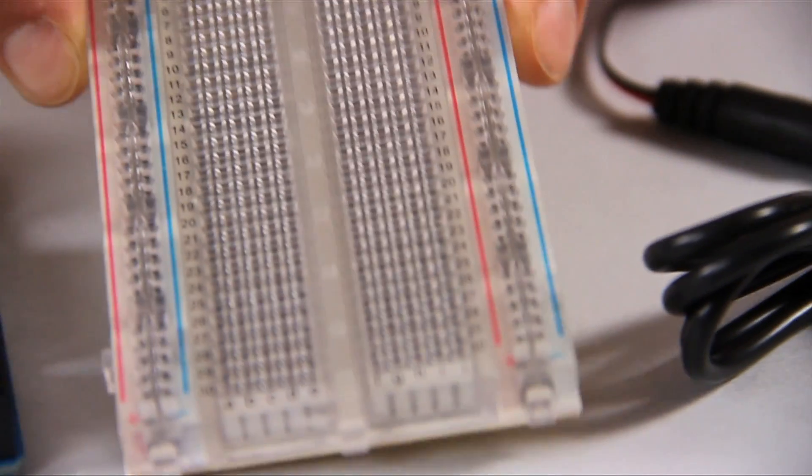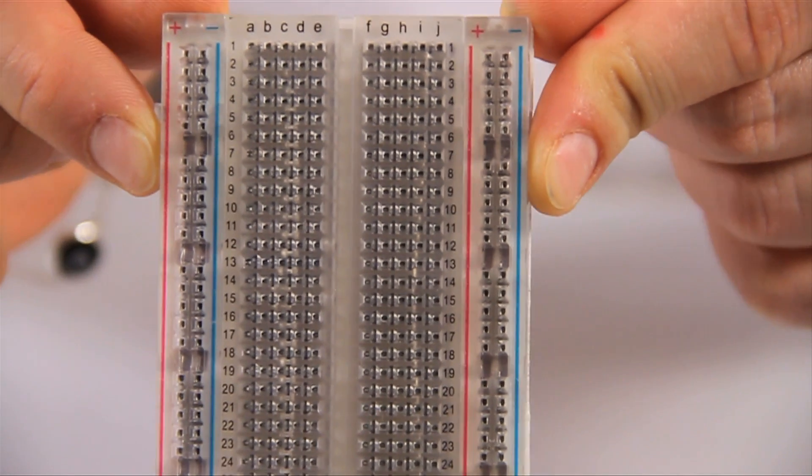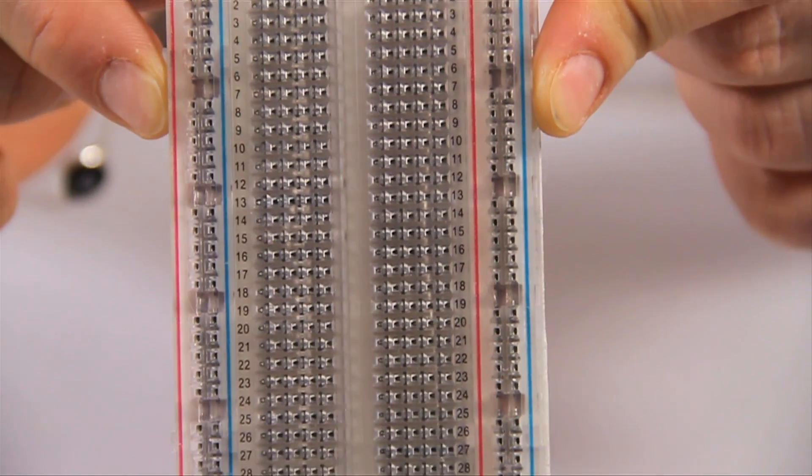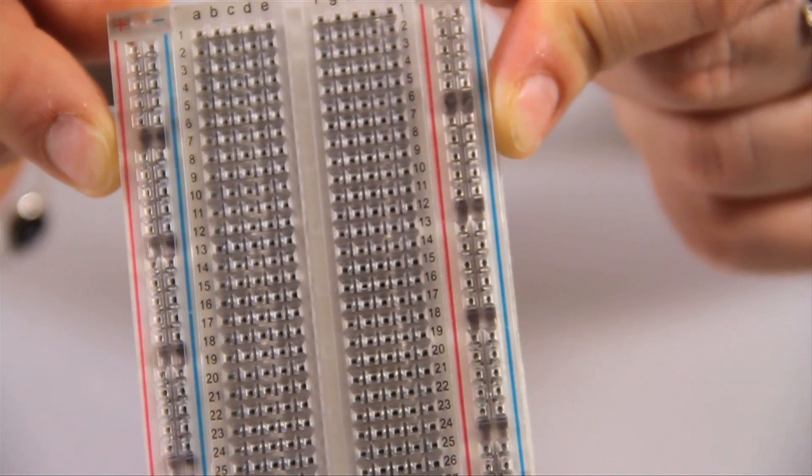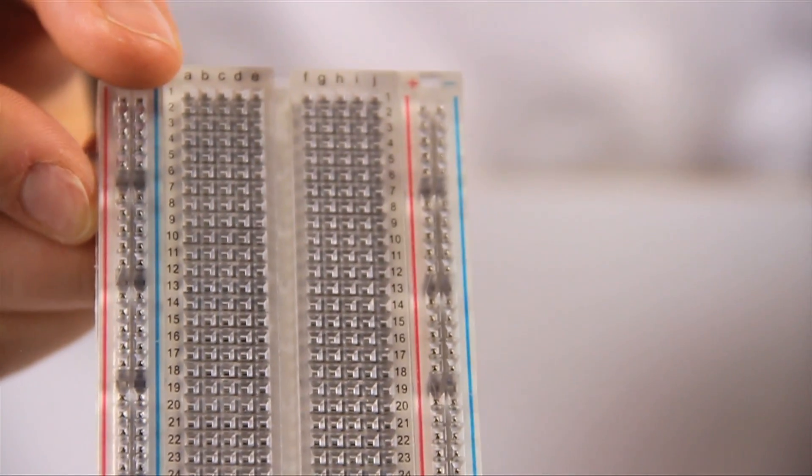The next component is the breadboard. A breadboard is great for making temporary circuits and prototyping as they require absolutely no soldering. The metal strips are springy so that when you poke a wire into the hole, the clip grabs onto it like this.